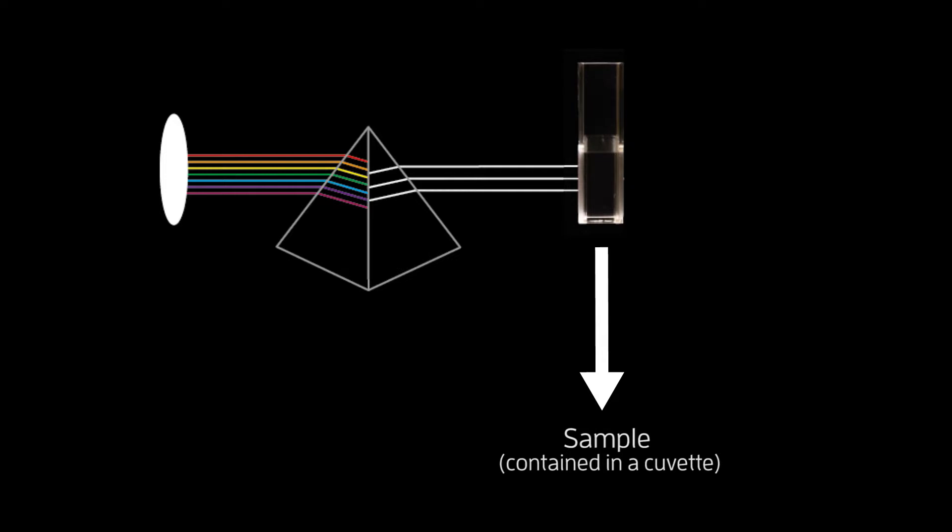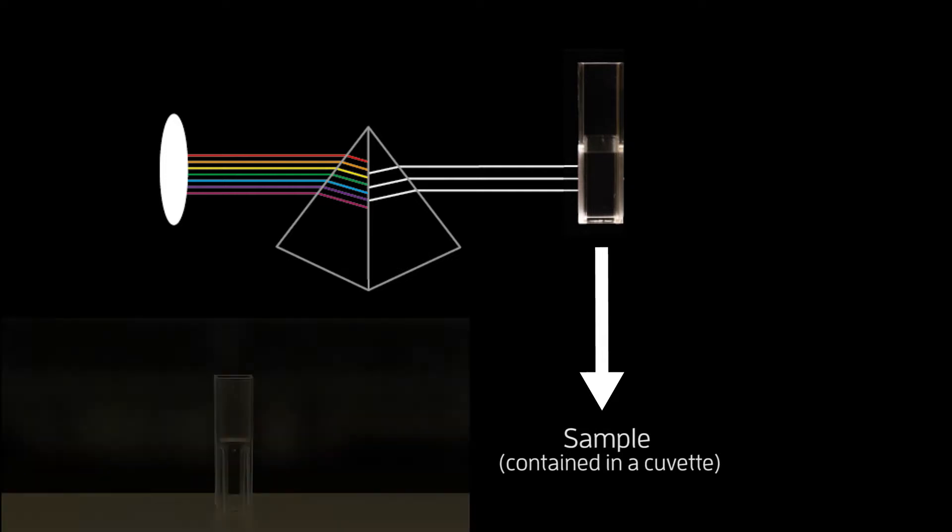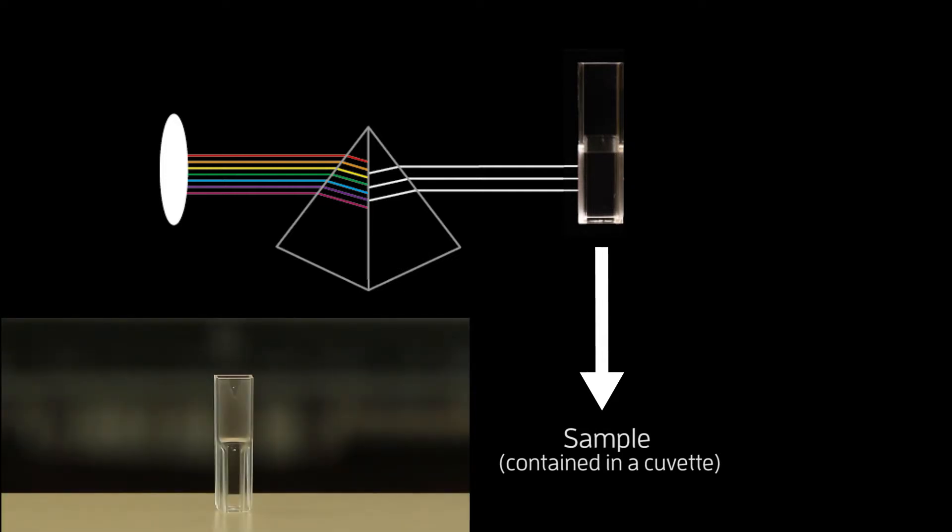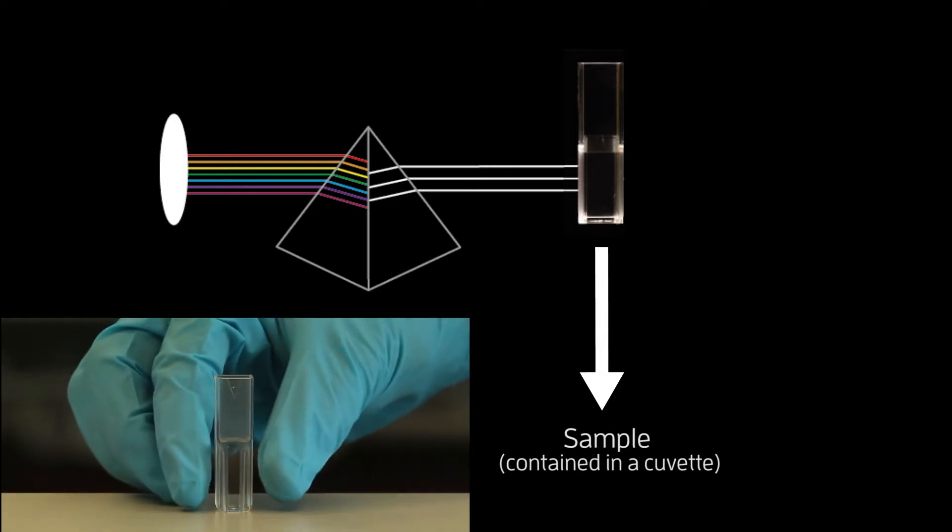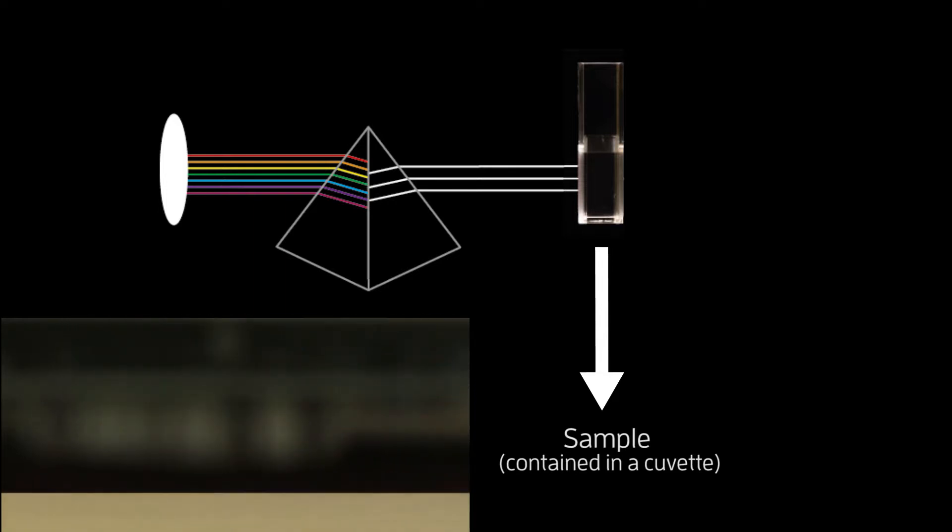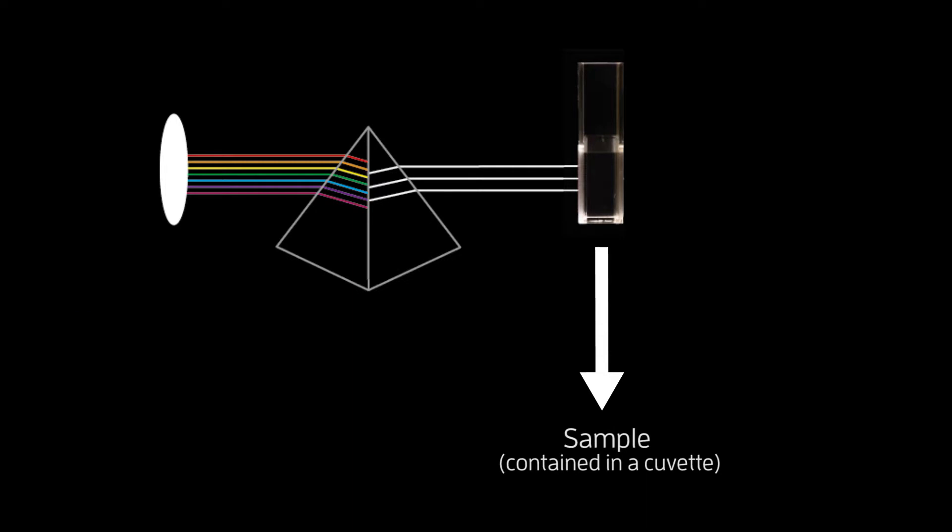Thirdly would come the sample which is contained in a cuvette. Cuvettes are small containers of known path length. They may be made of polystyrene or other plastics or in some cases quartz. You must select your cuvette carefully to prevent obstruction of wavelengths.